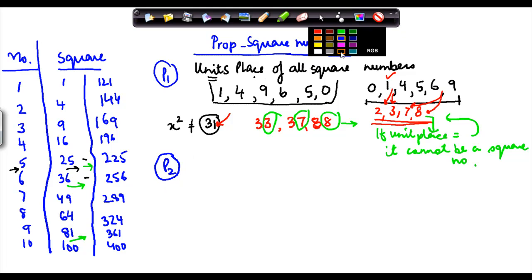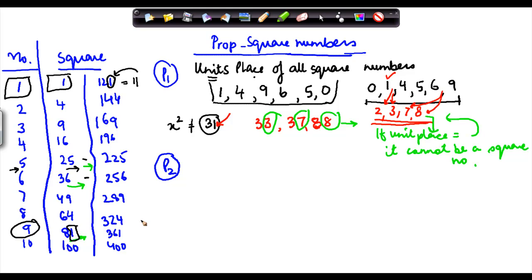So now we move on to property 2. The property 2 is that we know that square of 1 is equal to 1 and square of 11 is equal to 121. Similarly square of 9 is equal to 81 and square of 19 is equal to 361.